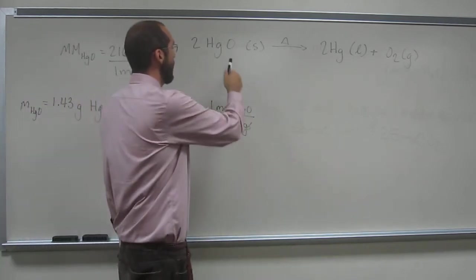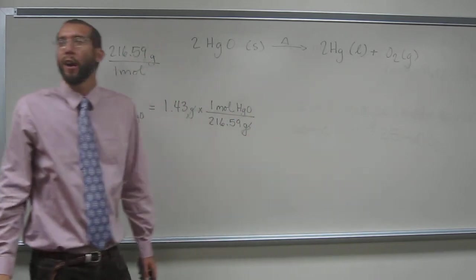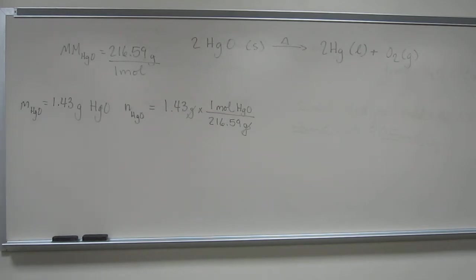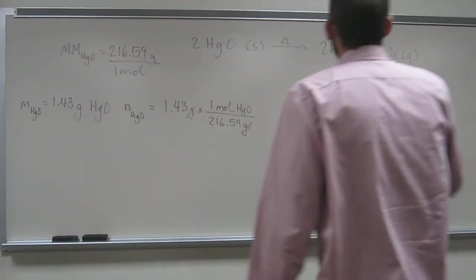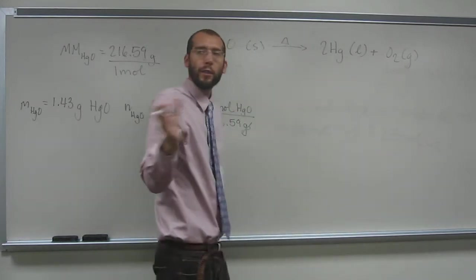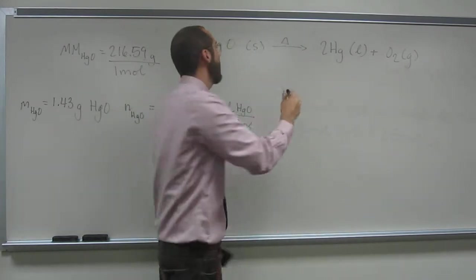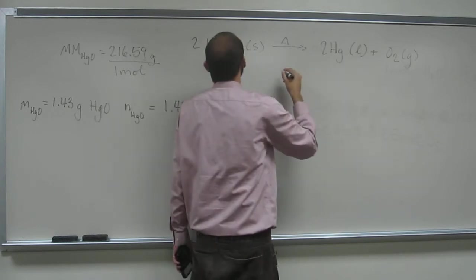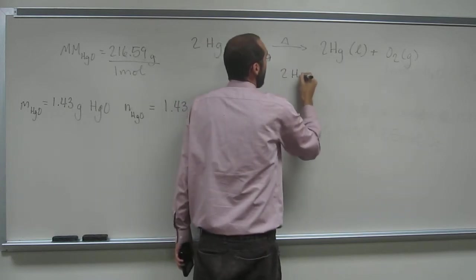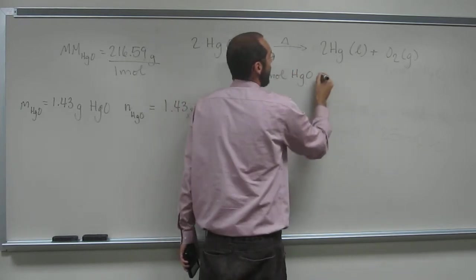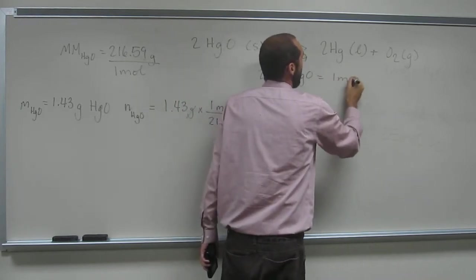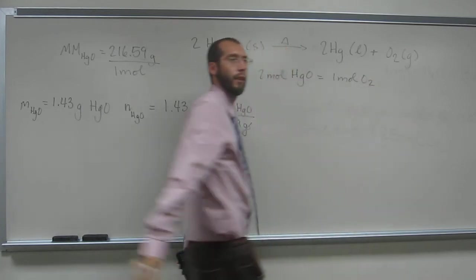So what does the chemical equation tell us? Remember, we're looking for oxygen, the mass of oxygen. So what do we know about the number of moles of mercury oxide relative to the number of moles of oxygen that we're going to make? Two to one ratio. So we can make another conversion factor out of that. So two mole HgO equals one mole O2.